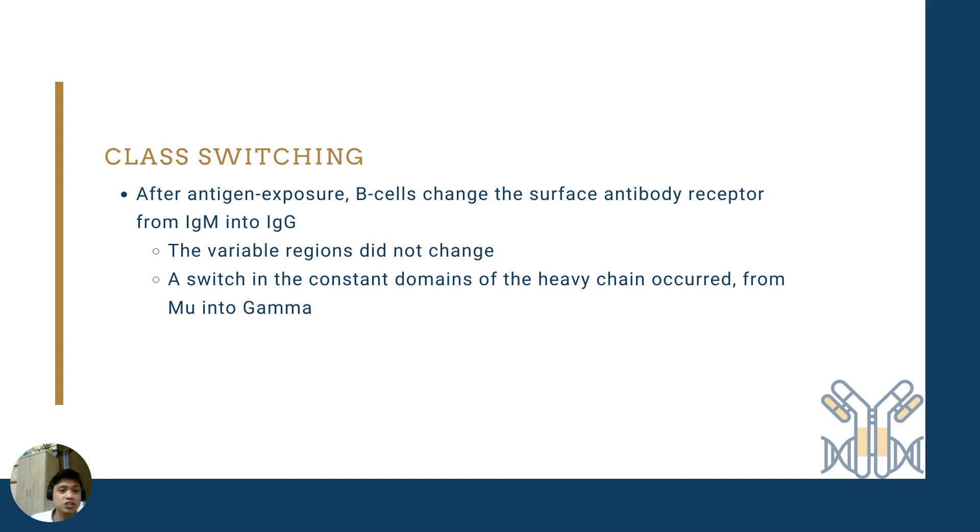The next concept is class switching. After antigen exposure, B-cells change the surface antibody receptor from IgM originally into IgG. Those naive B-cells which have not yet encountered the antigen expressed on their surface IgM. But once they are already activated, future B-cells, when they proliferate from being activated, will now express IgG. The variable regions did not change. And the switch into IgG is mediated by a change in the constant domain. From mu, which is the constant domain of the heavy chain of IgM, into gamma, which is the constant domain of the heavy chain of IgG.